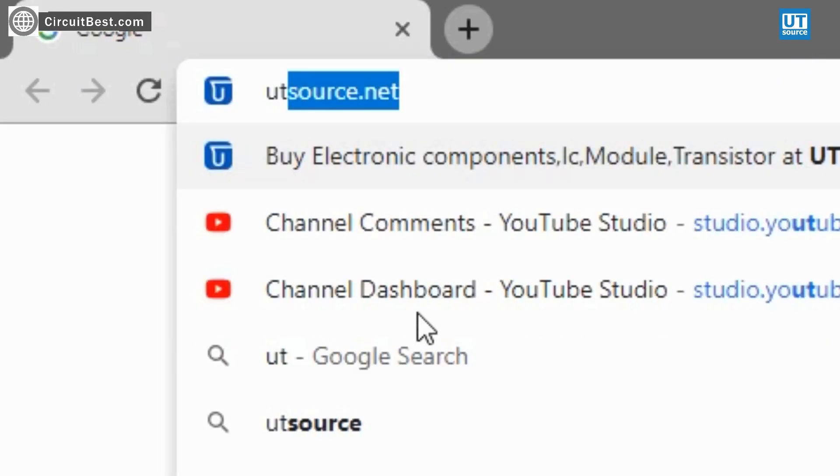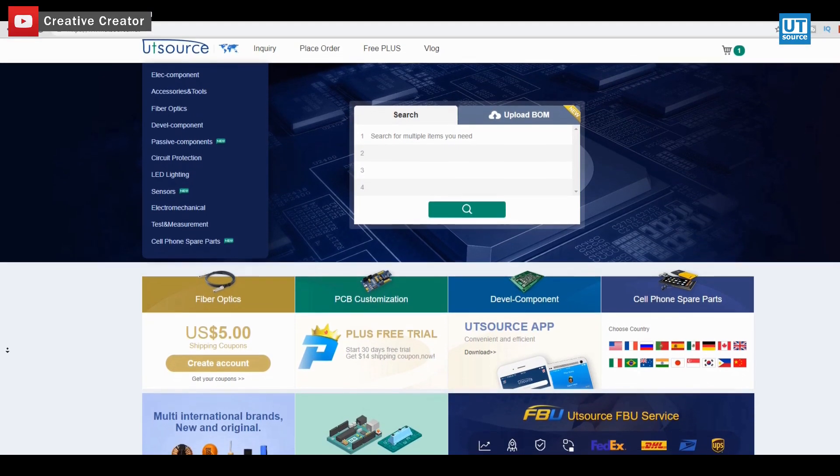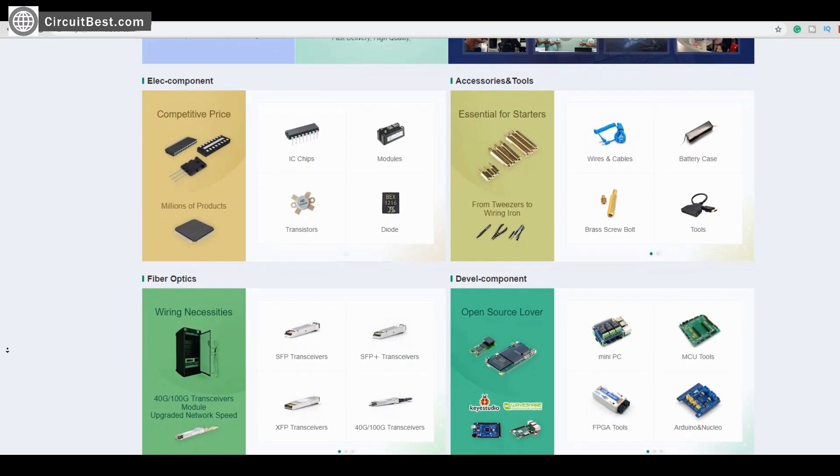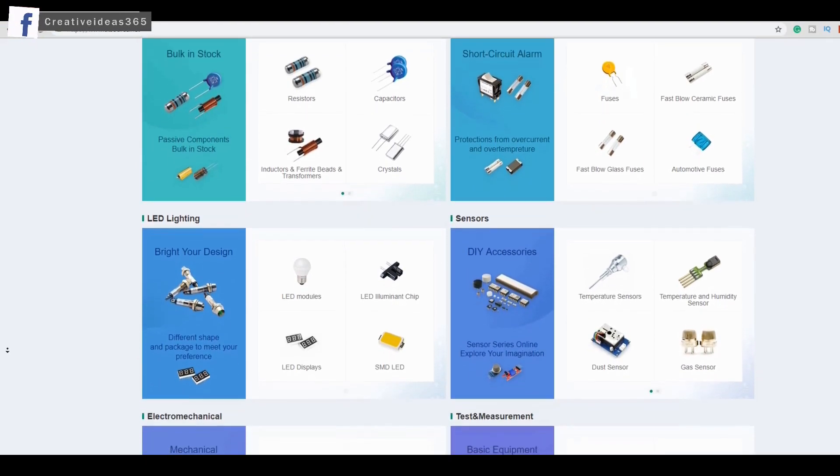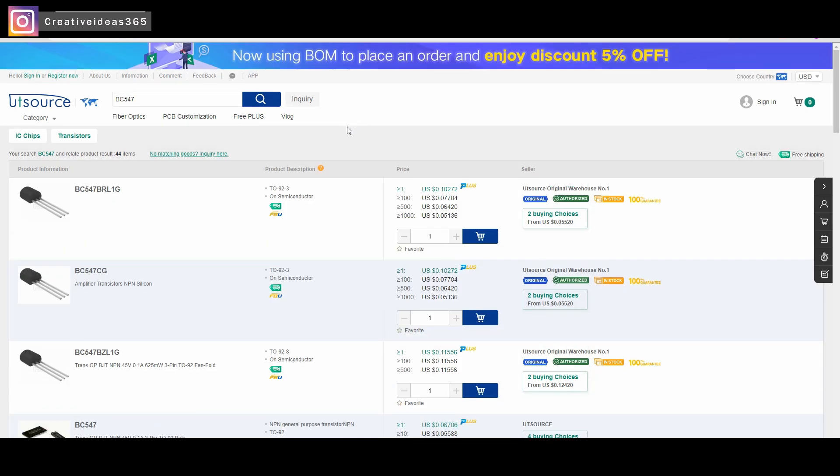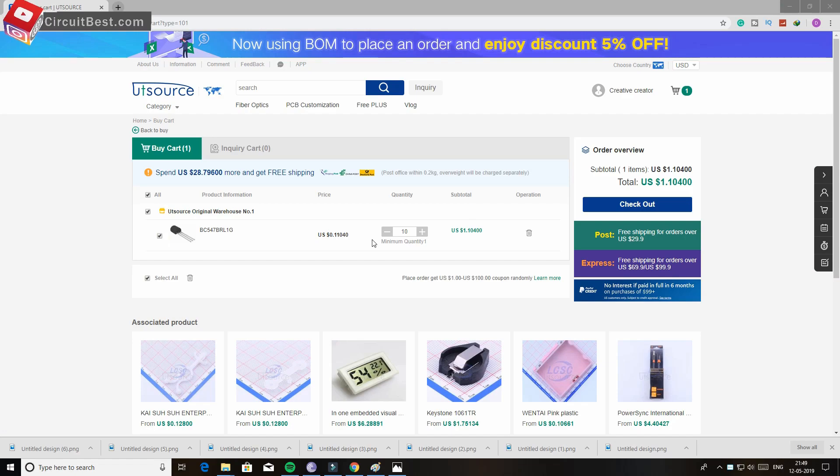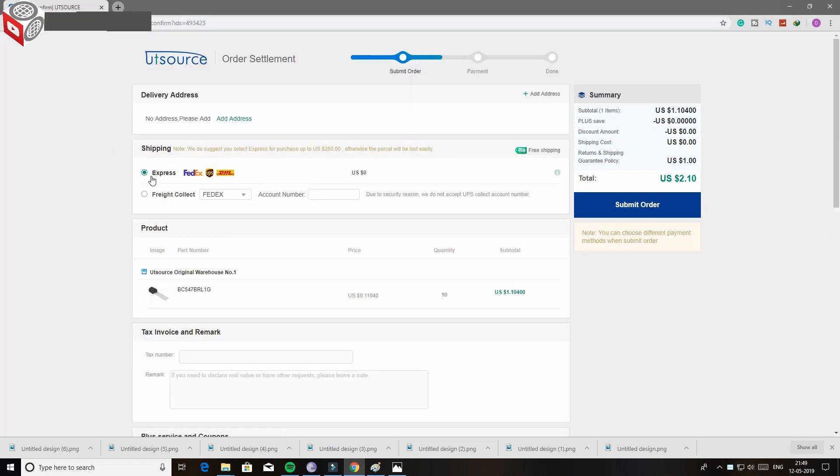That's why this video has been sponsored by UTSource.net. It is a professional tool in electronic components field. UTSource provides different types of things such as ICs, modules, RF transistors and much more. For this project I have ordered some components from their website and you can see the quality. It is just great and I have only paid few dollars. Check out the UTSource website from the link in the description box below.